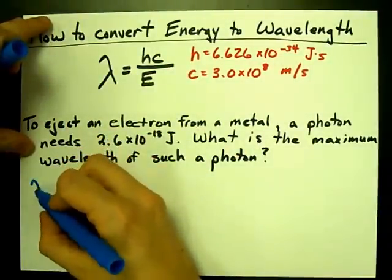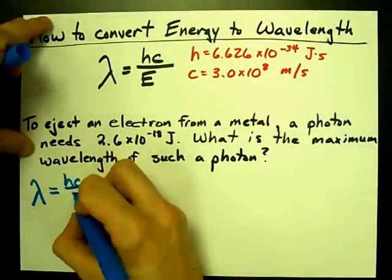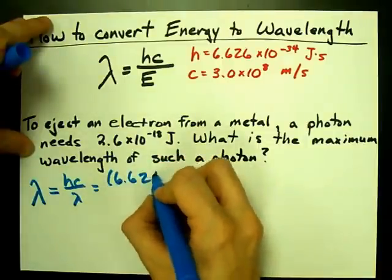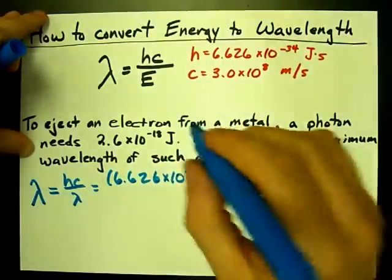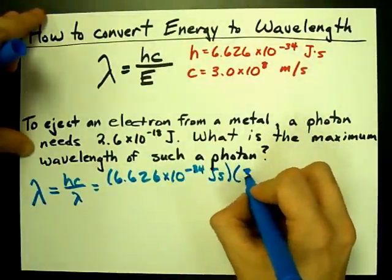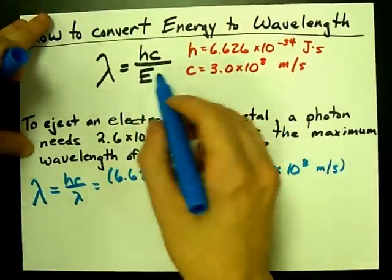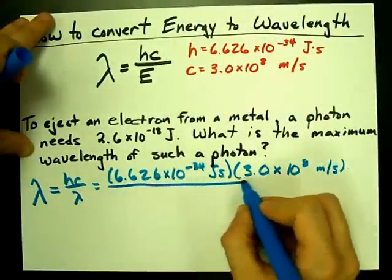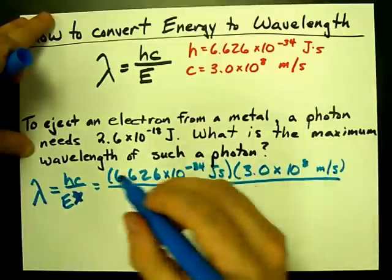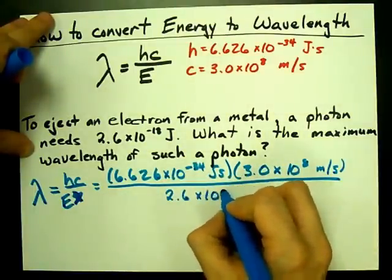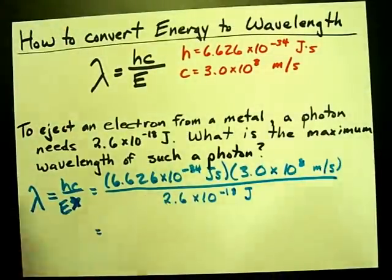In this case, my wavelength of light is h, which is 6.626 times 10 to the minus 34 joule-seconds, times the speed of light, 3.0 times 10 to the 8 meters per second, divided by your energy—2.6 times 10 to the minus 18 joules. Do that on your calculator.